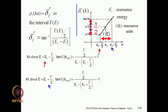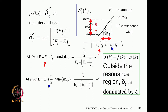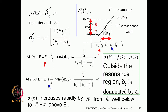Outside the resonance region, most of the phase shift comes from the impenetrable part xi, which dominates. But in the resonance region, the phase shift delta^r (or ρ) makes an important contribution. In the resonance region, the net phase shift goes through pi as you go from well below the resonance to well above it — pi/2 in the immediate vicinity, plus pi/4 below and pi/4 above, for a total variation of pi.